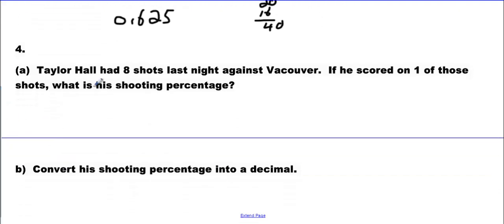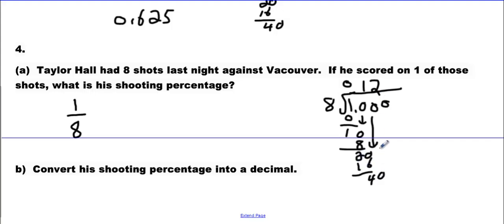And the last question. Taylor Hall had 8 shots last night. And he scored on 1 of them. What's his shooting percentage? Same idea. 1 out of 8. You're going to do some long division stuff over here. Try to beat me on this. We're going to get 1. Bring the 0. Now we have 10. We're going to put 1. And then go down with the 20. You've got 2 here. That makes 16. 40. We're going to get 0.125. So we'll put that as a decimal for the last one because it asks us to do so. And this one's going to be the percentage, which is 12.5%.